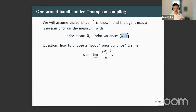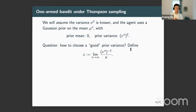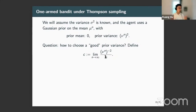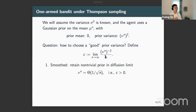For Thompson sampling applied to the one-arm case, we assume the variance σ is known and the agent uses a Gaussian prior on the unknown mean μ_n with mean zero and prior variance ν_n. The quantity ν_n is part of the policy design — large ν_n means little prior knowledge, small ν_n means more prior knowledge on the range of μ_n. The key design question is: what is a good choice for prior variance ν_n? We define C as the limit of n · ν_n as n → ∞, capturing how big the prior variance is relative to the 1/n scale.